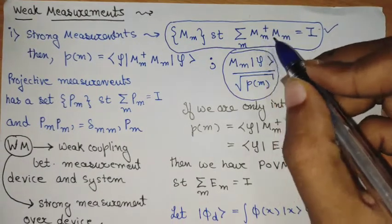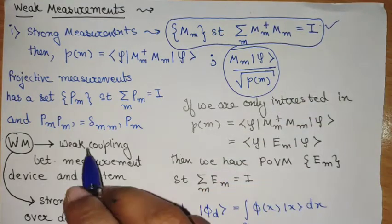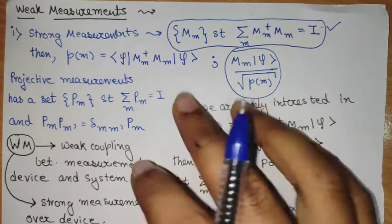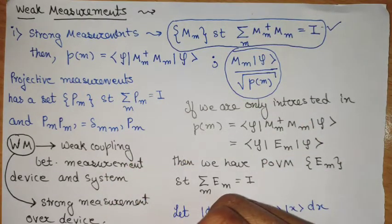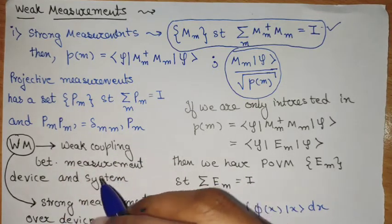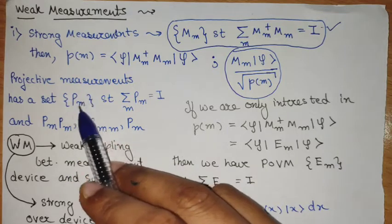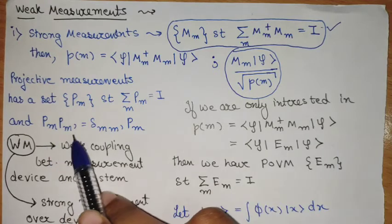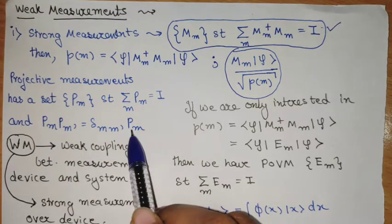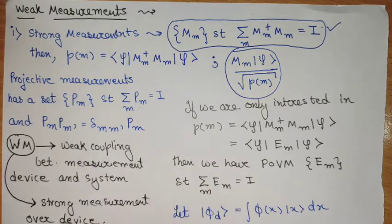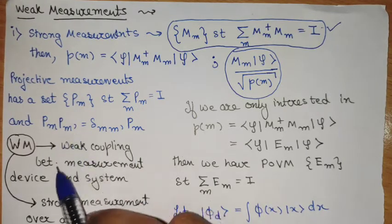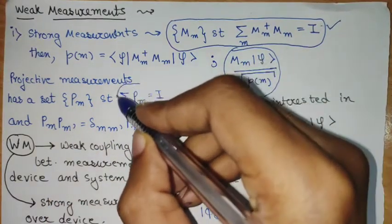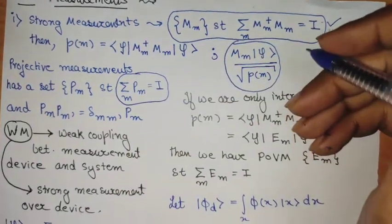Now we can change the measurement procedures. There are different measurements. This is the definition of a strong measurement, and weak measurement is in some sense relaxing these notions. Projective measurements also have an indexed set, but here the measurement operator satisfies P squared equal to P, and PI and PJ are orthogonal to each other. In this regard, it satisfies a completeness relation of this form. These are the projective measurements.